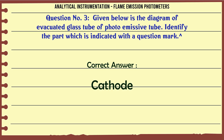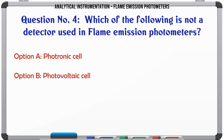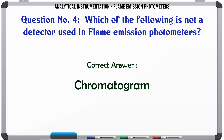Which of the following is not a detector used in flame emission photometers? A. Photronic cell. B. Photovoltaic cell. C. Photoemissive tube. D. Chromatogram. The correct answer is: Chromatogram.